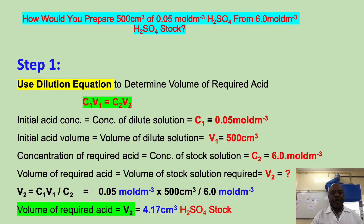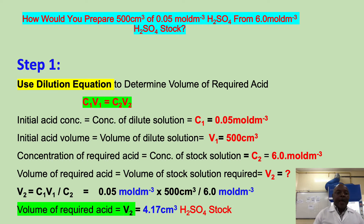We are using the dilution equation to calculate the required volume of acid that needs to be diluted. We use C1V1 = C2V2. Some books may use M1V1 = M2V2. I decided to use C in place of M. C1 is the concentration of the dilute acid, and our value is 0.05 mol per dm³.